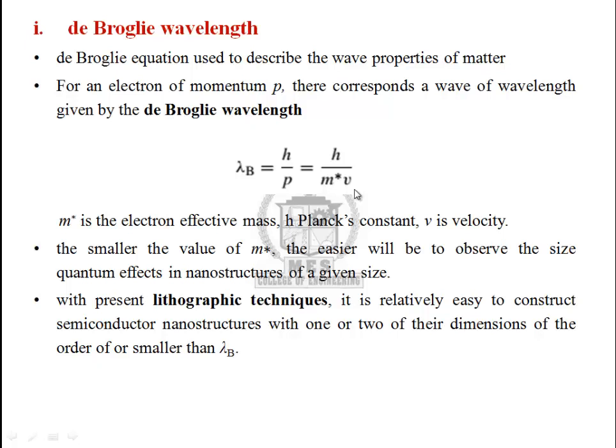Lithographic techniques are used to form new structures. For such structures, the dimension must be equal to or less than lambda B. That means the mesoscopic system will exhibit wave-like behavior.